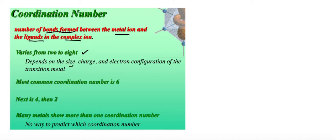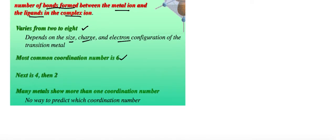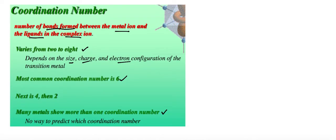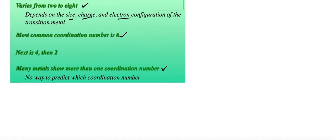There's no particular way of measuring it but it could vary from 2 to 8, totally depending on factors such as size, charge, and electron configuration. Six is the most common, so you would see lots of the word hexa repeated later on when we talk about naming. Four and two are also common; it's really rare for it to be more than six. Many metals show more than one coordination number. There's no way to predict it so you don't have to worry too much, just know the meaning of coordination number.